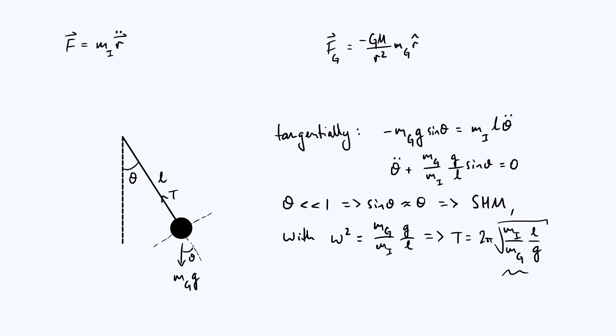As a final point, you may be thinking they don't have to be the same. Mi over mg could be some constant. Maybe the inertial mass is always twice the gravitational mass. Now it doesn't really matter whether mi over mg is one or some other constant.